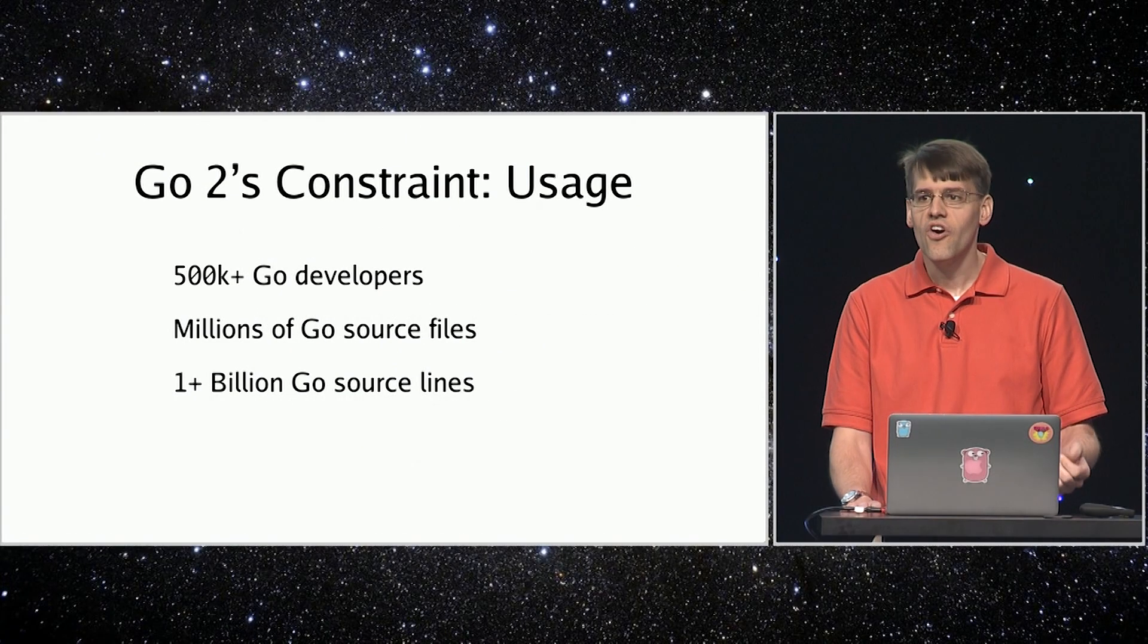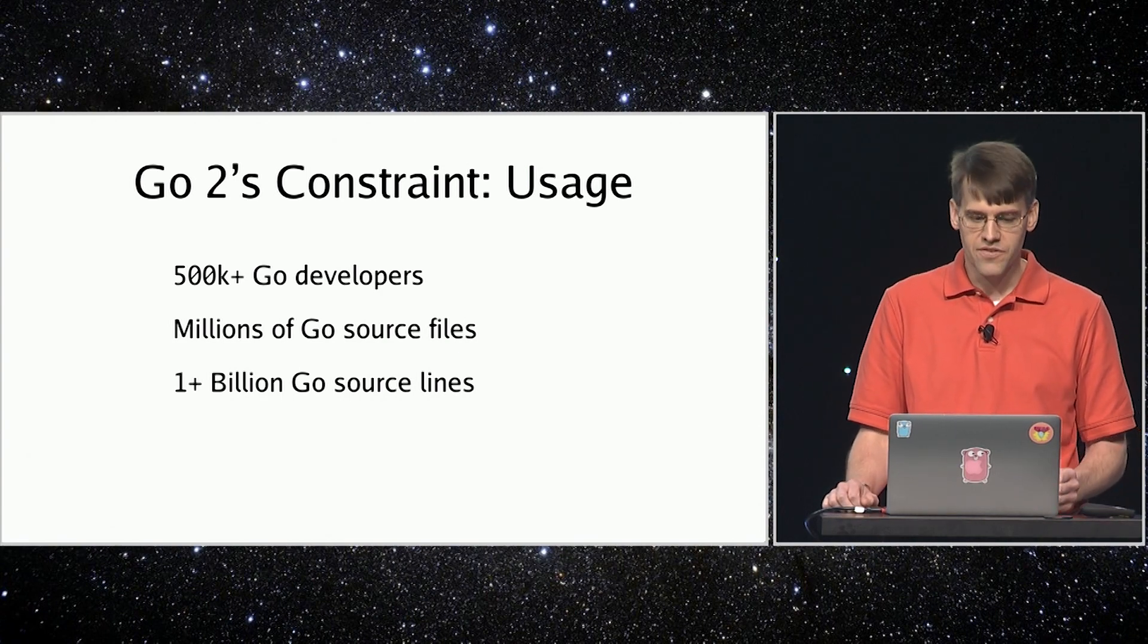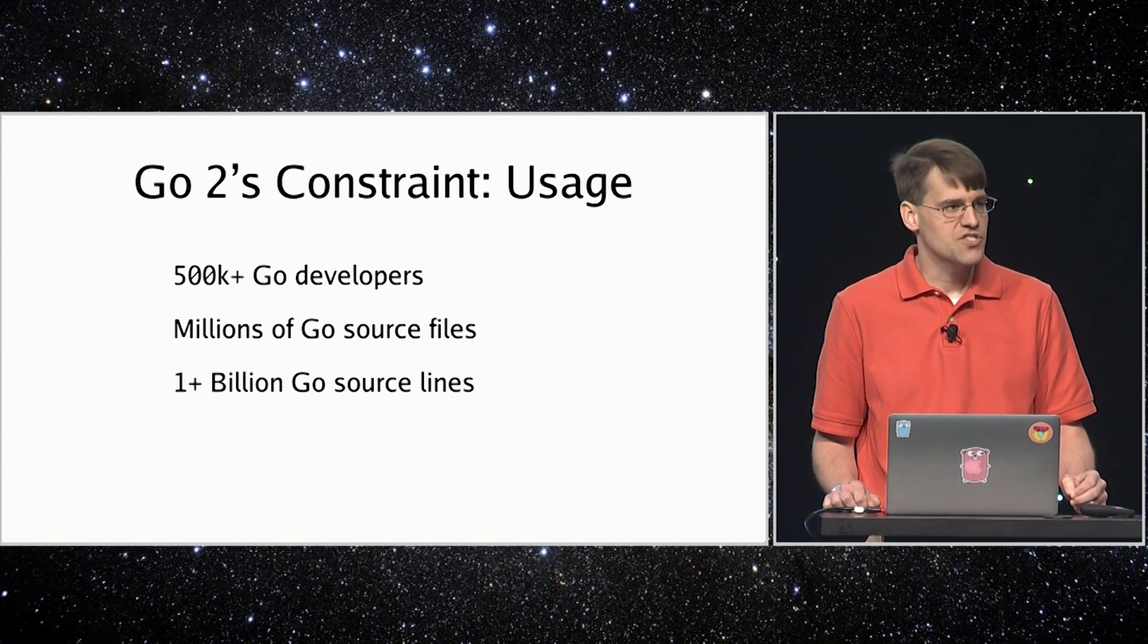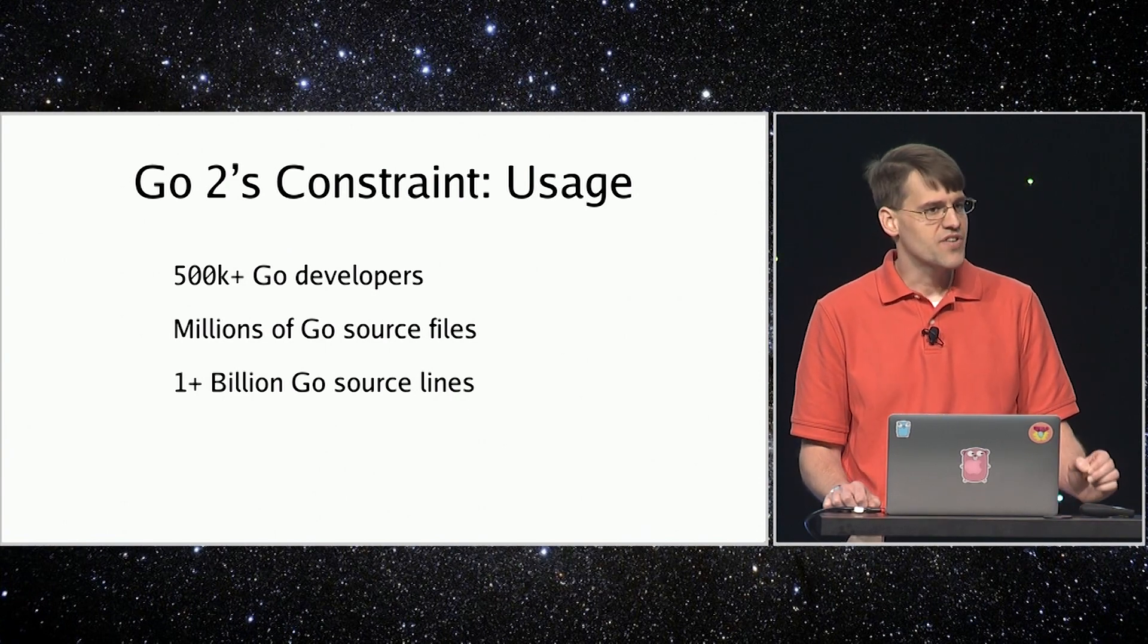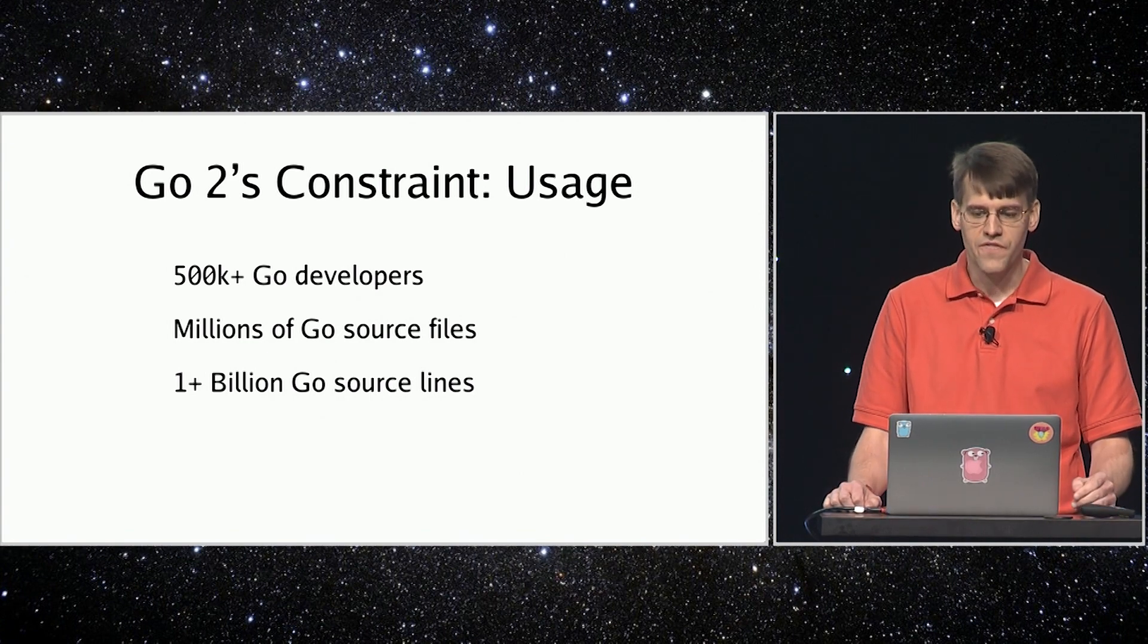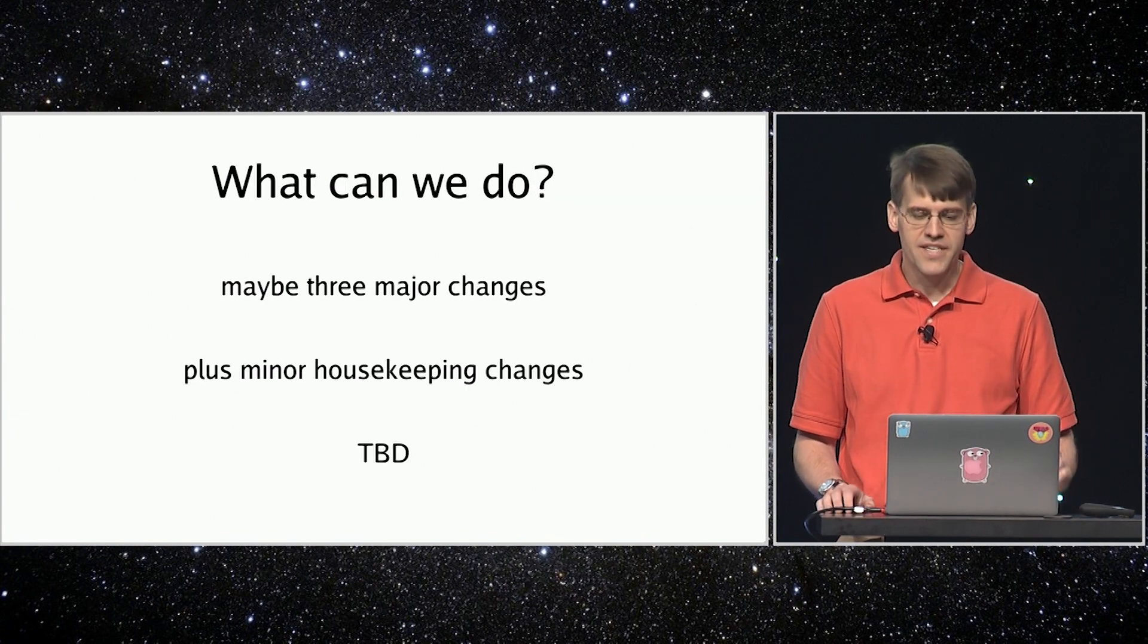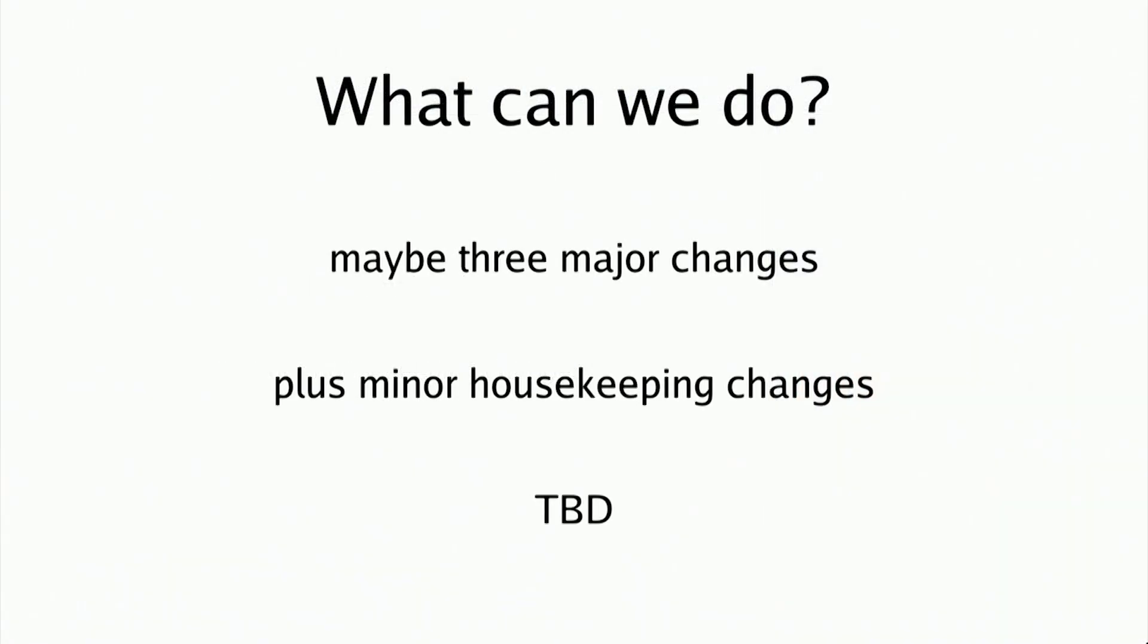Go 2 must also bring along all the existing Go 1 source code. We must not fragment the Go ecosystem. Mixed programs in which packages written in Go 1 import packages written in Go 2, and vice versa, must work effortlessly and perfectly during a transition period of multiple years. We'll have to figure out exactly how to do that. Automated tooling like GoFix will certainly play a part. To minimize disruption, each change will require careful thought, planning, and tooling, which in turn limits the number of changes we can make.